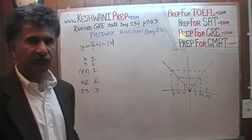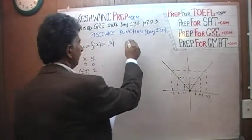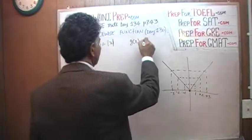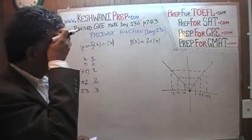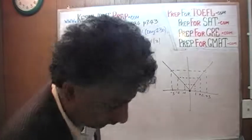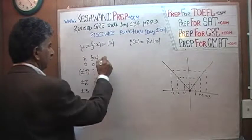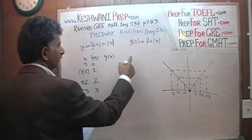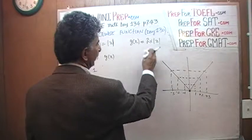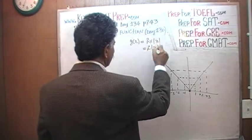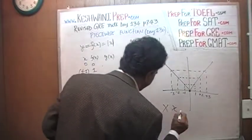Now the question is: what's going to happen to the shape of this graph if you take our original function and multiply it by 2? We give it a new name — this is g(x) equals 2 times the absolute value of x. That's a multiplication sign, not an x. My multiplication sign looks like this, and my x's look like that — just so you know.